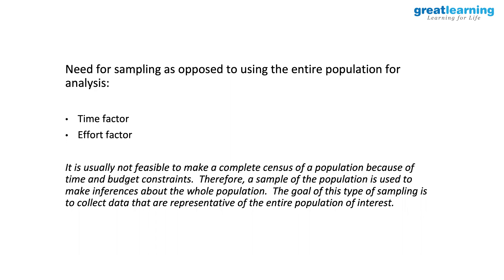There's a term called degrees of freedom, where instead of dividing by n in the standard error formula (standard deviation divided by square root of n), you use n-1, which increases the denominator. Through these statistical approximations, you move from a T-distribution to a Z-distribution, which is a normal distribution. Once you make these edits, your T-distribution tends to behave like a normal distribution.